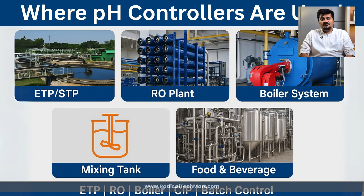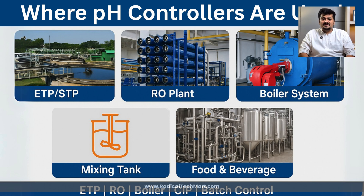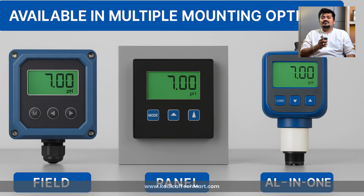Now let's cover where it's used. You will commonly find pH controllers in: first, ETP or STP plants for automatic acid or alkaline dosing; second, RO systems to protect membranes from extreme pH; third, boilers and cooling towers to maintain pH for corrosion control; fourth, chemical mixing tanks for batch process monitoring; and fifth, the food and beverage industry for CIP and fermentation pH control. They can be panel mounted, field mounted or even built into an all-in-one sensor unit.